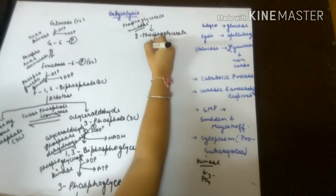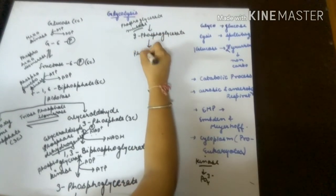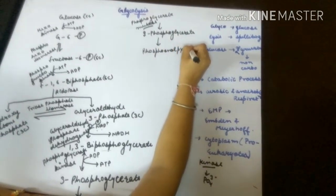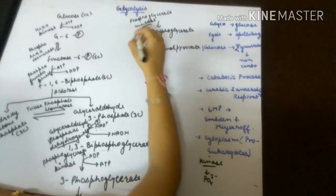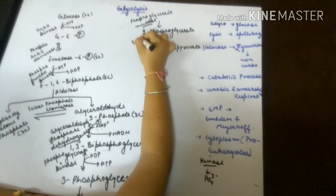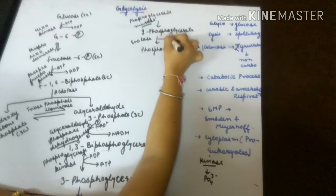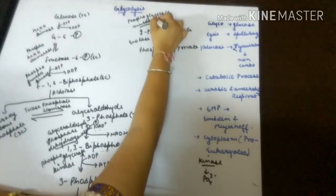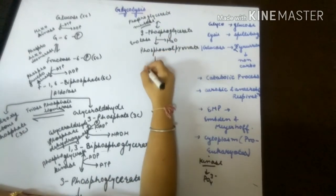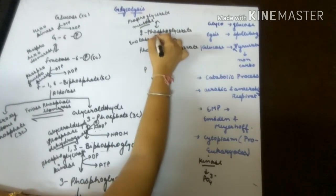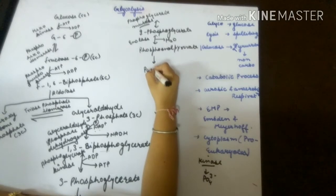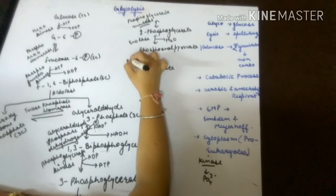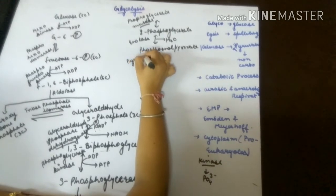The word mutase is used here because there is just a change in the position of the phosphate group. Then 2-phosphoglycerate gets converted into phosphoenolpyruvate by the enzyme enolase, with a release of a water molecule.